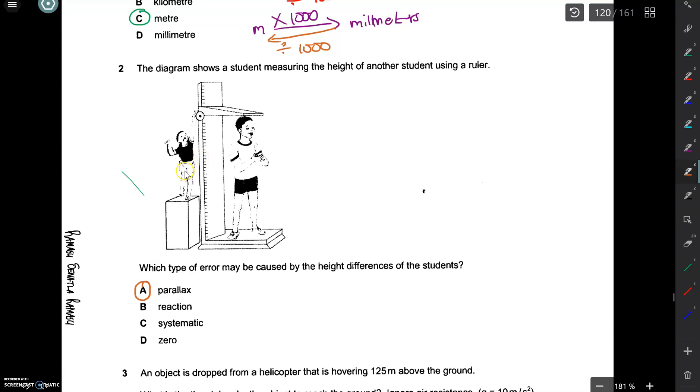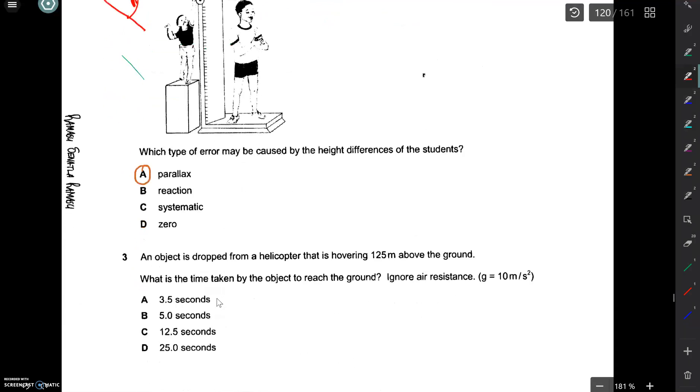A parallax error is when you are taking a reading, but your eye is not level with the reading or with the ruler or with the measuring instrument. So if you are taking a measurement like this, then your eye needs to be level with the measuring instrument like this. So if your eye is not level, the error that is most likely to happen is called a parallax error.